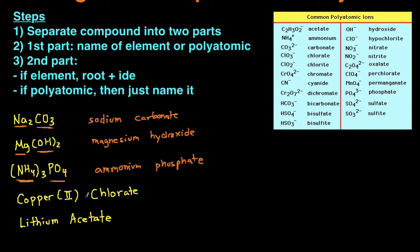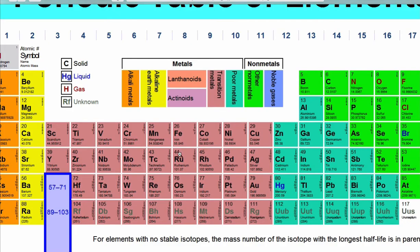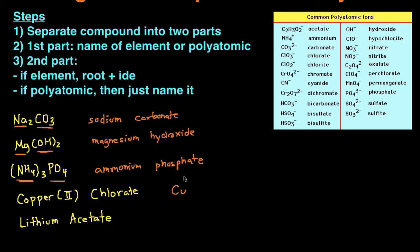So the first one, copper(II) chlorate. Copper is Cu, and if you're not really sure what this Roman numeral is, it just tells you the charge of the copper. And the reason why we have a Roman numeral there is because copper is a transition metal, meaning it can have multiple charges. So copper, and then it's going to have a positive two charge, and then chlorate is ClO3 minus.